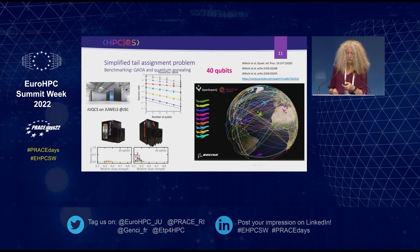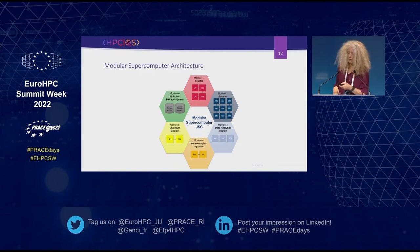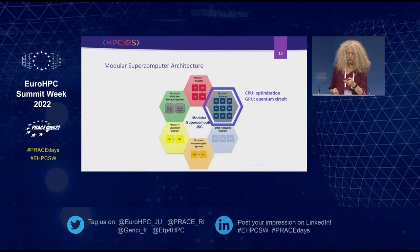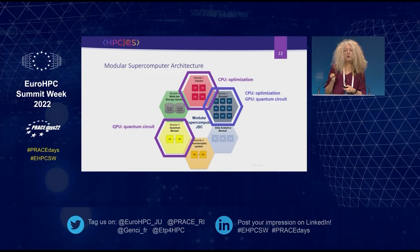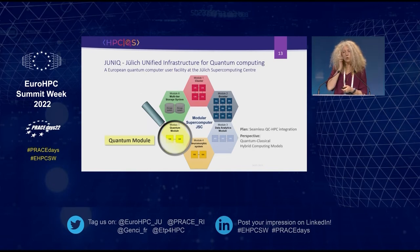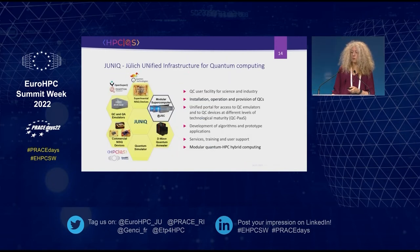What we actually did uses our modular supercomputing architecture, but for now we only use the booster — the CPU for optimization and the GPU for the quantum circuit. We are working on using two modules: the CPUs from the cluster module and a real QPU to run the quantum circuits — a real hybrid algorithm running on a modular supercomputing architecture. The goal is quantum-classical hybrid modeling.